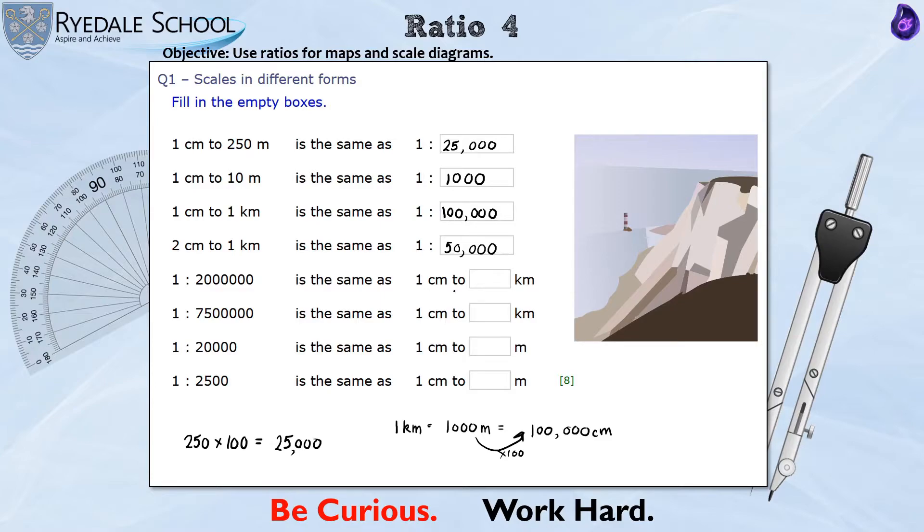I'm also going to use some sneaky shortcuts on the second set of questions if possible. So we've got 1 to 2 million and we want it in 1 centimetre to so many kilometres. A minute ago we did 1 centimetre to 1 kilometre was 100,000. And this is 20 times bigger. So I'm just going to put straight away it's 1 centimetre to 20 kilometres. Similar idea here. This is 75 times bigger. So it's 1 centimetre to 75 kilometres.